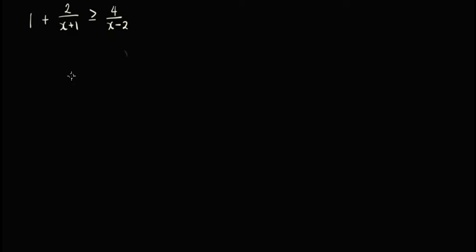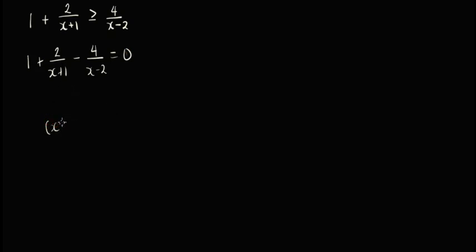We have 1 plus 2 over x plus 1 is greater than or equal to 4 over x minus 2. Katulad lang din ang pag-solve natin ng ibang rational inequality. Let's put everything to a single side, so we have 1 plus 2 over x plus 1, then transpose 4 over x minus 2 to the other side, so we have minus 4 over x minus 2 is equal to 0. The LCD is x plus 1 times x minus 2.